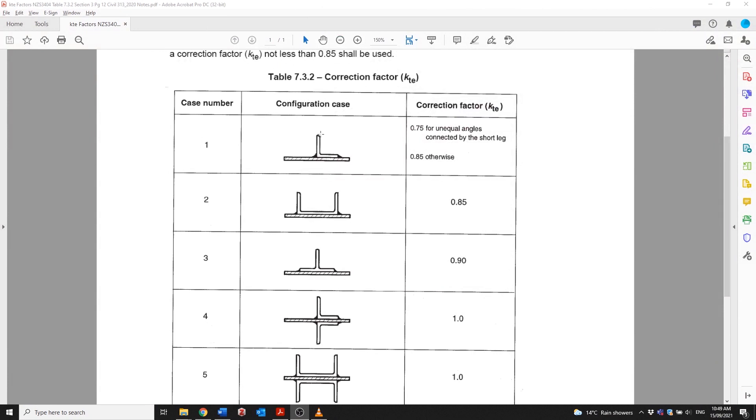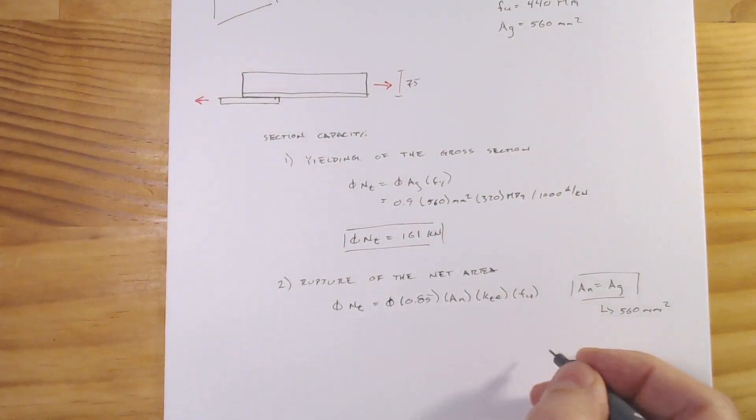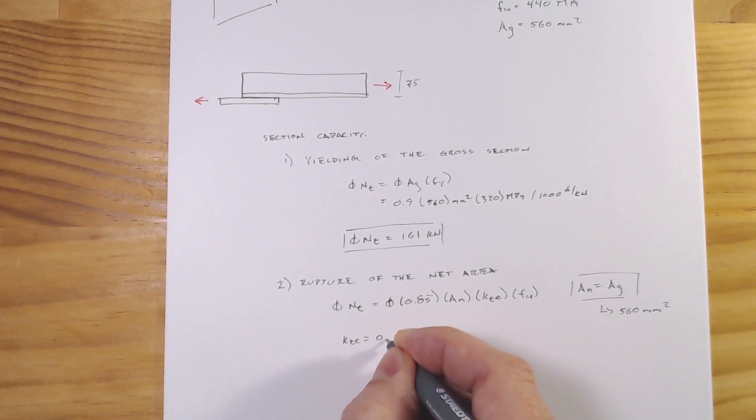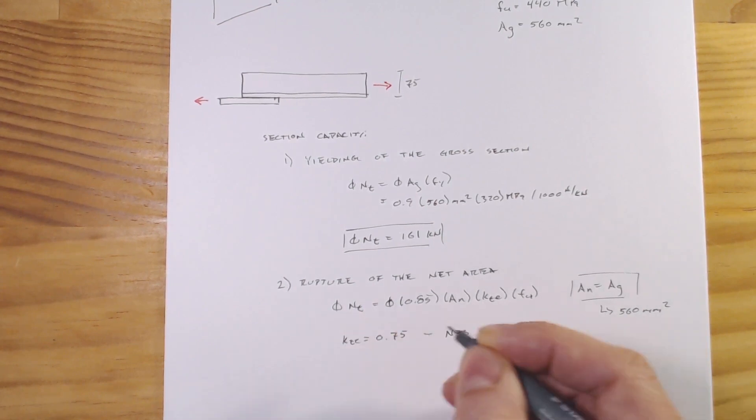Going back to the chart here, we have an unequal angle and we're connected through the short leg so we have a kte factor of 0.75. So let's just come back to our page. We have kte equals 0.75 and that's from NZS 3404 table 7.3.2, just putting our reference down here.